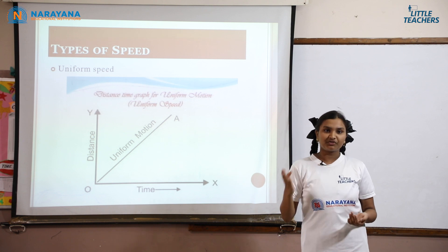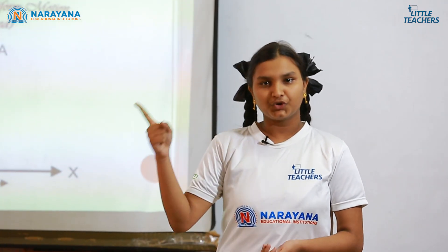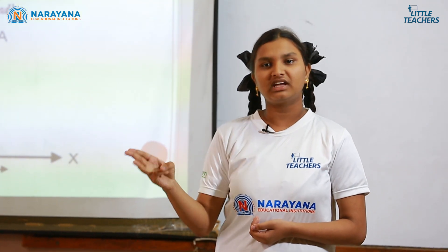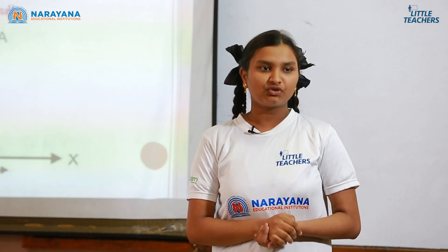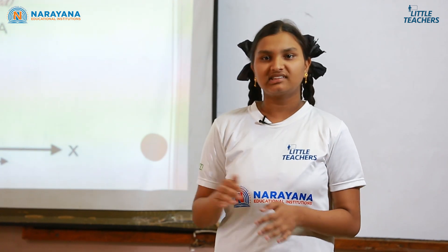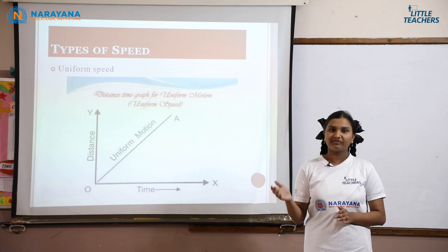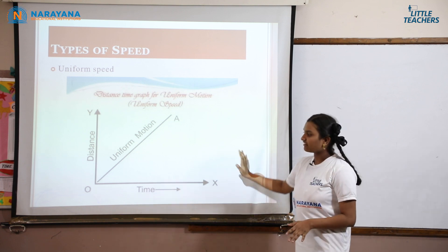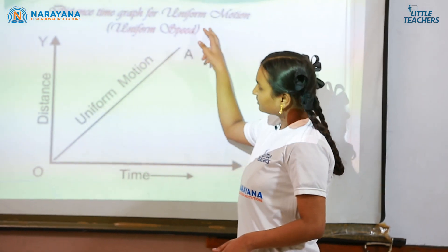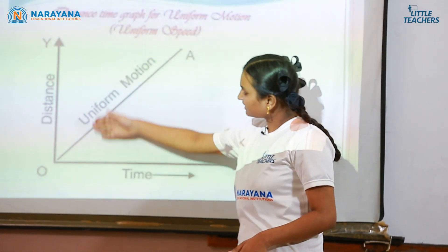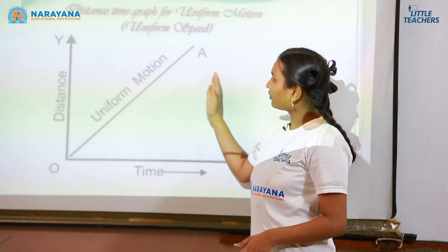Now coming to the types of speed. There are especially 4 main types of speed in physics: uniform, non-uniform, average, and instantaneous speed. First, uniform speed: if a body covers equal distance in equal intervals of time, then we can say the body is moving with uniform speed. See this graph as an example — in this distance-time graph, the body travels in a straight line from the origin, showing uniform speed.